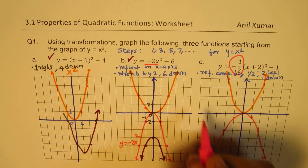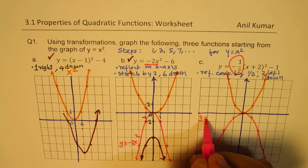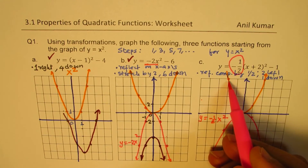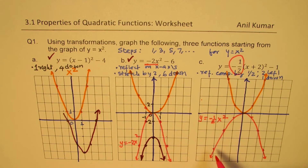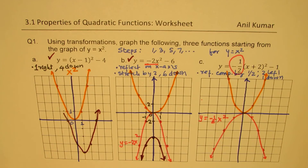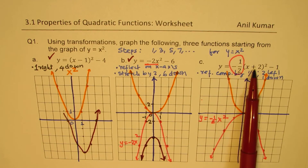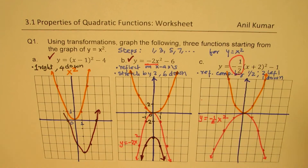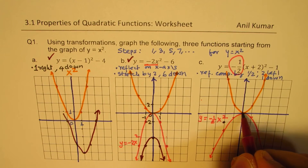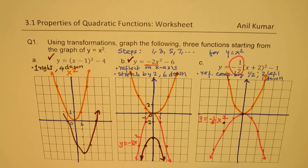This graph of y equals minus half x squared has every point reflected and vertically compressed by a factor of half — you just multiply by negative one-half. Now the final step is to translate 2 units left and 1 down, so this vertex moves to the new position.